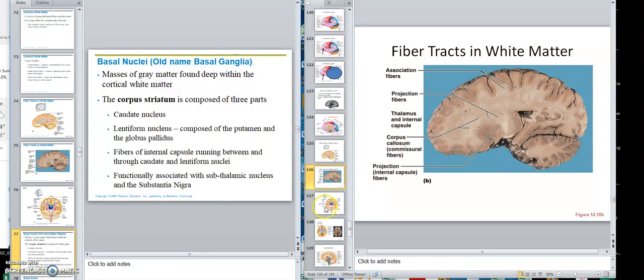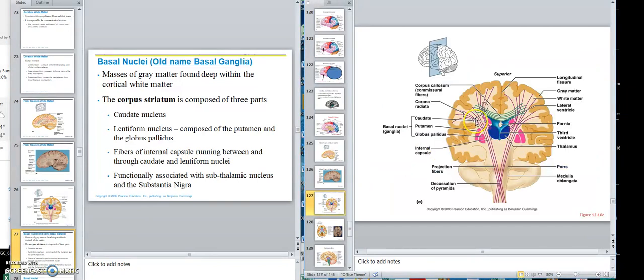Fibers of internal capsule run in between and through the caudate and the lentiform nuclei. Let's go here. Matter of fact, I could have been showing you this one. You see right here, here's the lentiform, which is the putamen and globus pallidus. Here's the internal capsule, and there's the caudate. So that's what they said. Fibers of internal capsule. Remember, these were the internal capsule. It's running between the caudate and the lentiform.